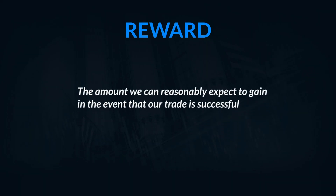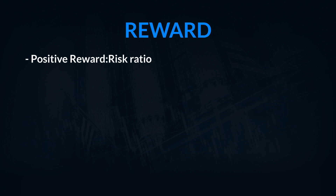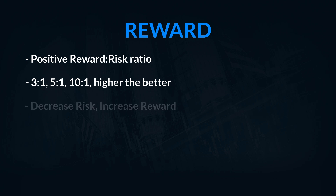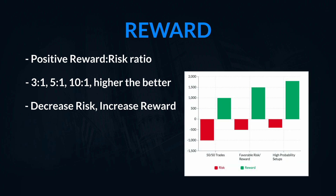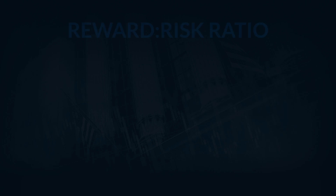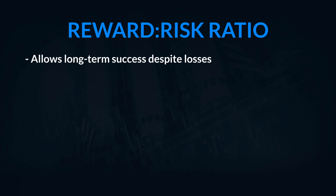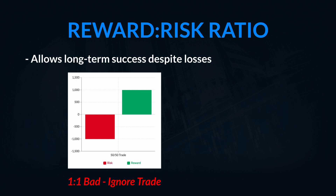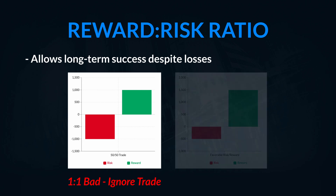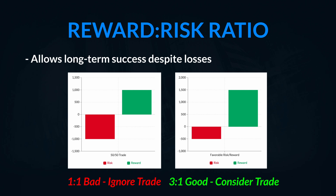The next part of our discussion is on reward — the amount of money that we can reasonably expect to make if the trade goes well. We always want to have a positive reward-to-risk ratio, and whether that's 3-to-1, 5-to-1, or 10-to-1, the higher the better. We are always trying to decrease our risk and increase our reward. Having a high reward-to-risk ratio enables us to make many mistakes and still come out as profitable traders. If I have a 5-to-1 reward-to-risk ratio, I can be wrong 4 times and if I'm right on the 5th, I break even.